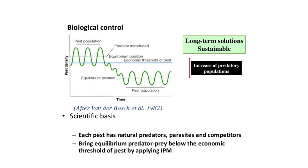Insects are strongly regulated by naturally occurring enemies — mainly predators, parasites or parasitoids, pathogens, and competitors. In most managed ecosystems, these biological interactions are disrupted compared with natural ecosystems, and certain species escape natural regulation and become pests.